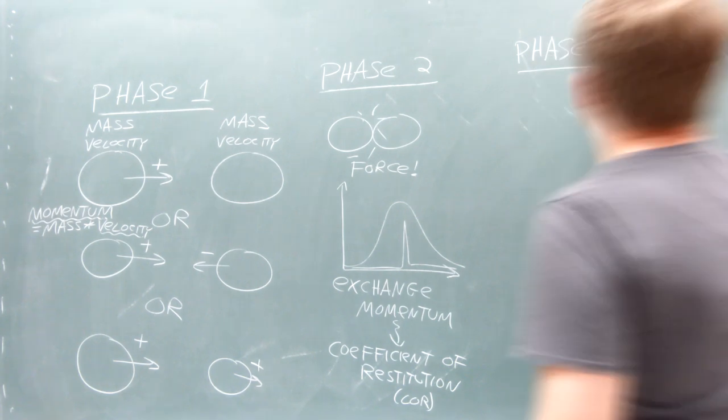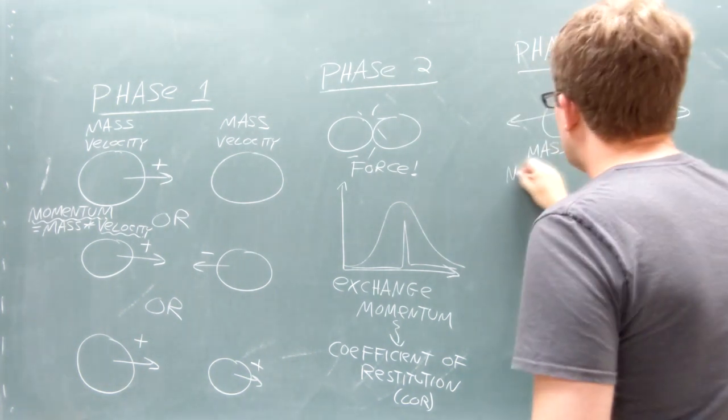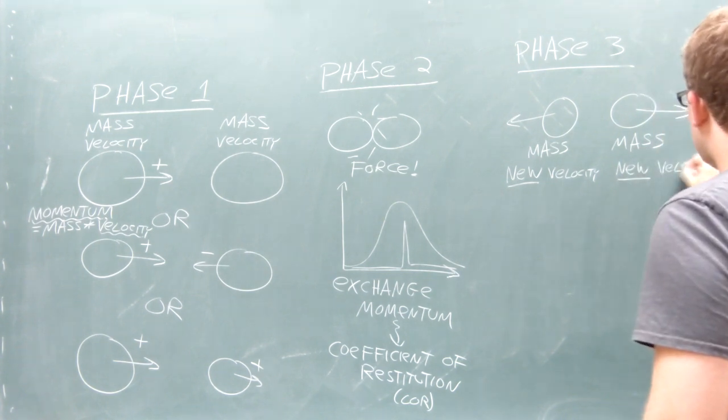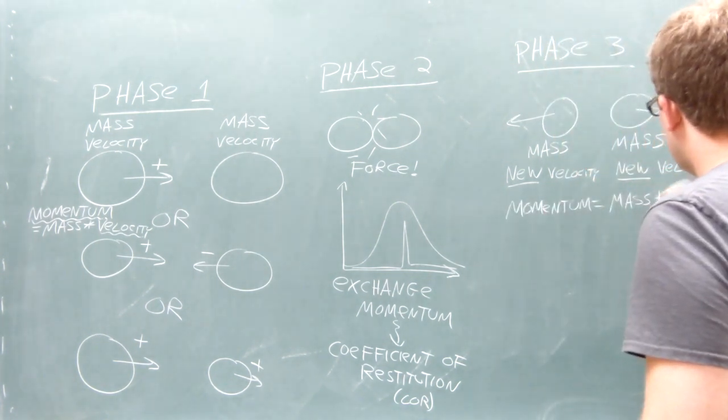In phase three, the colliders move along at their new, outgoing velocities. The important features here are the mass of each collider and the outgoing velocity of each collider. The velocities have changed during the interaction.